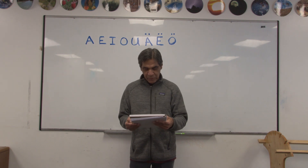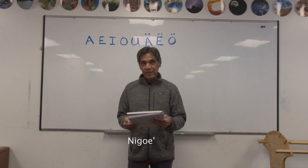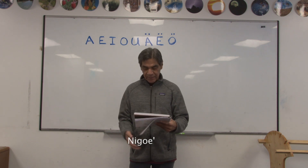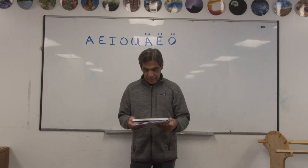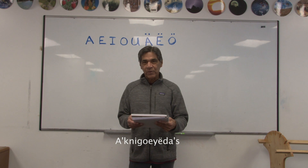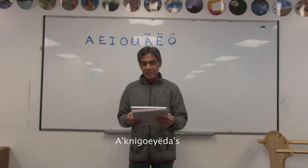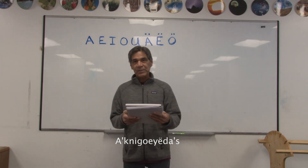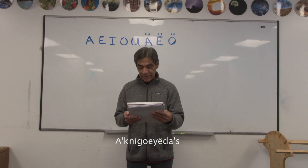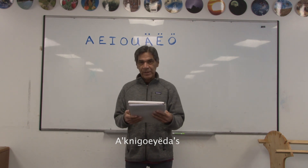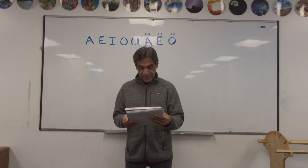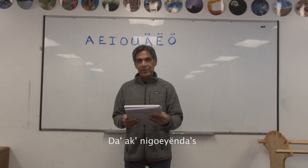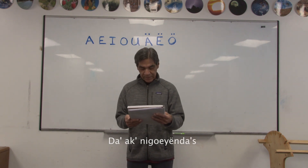We went over the root ni-goi, which means talking about the mind. The example was ak-ni-goi-yan-dots: I understand, which literally means my mind has settled on it. The negation is da-ak-ni-goi-yan-dots: I don't understand, meaning my mind isn't settled.